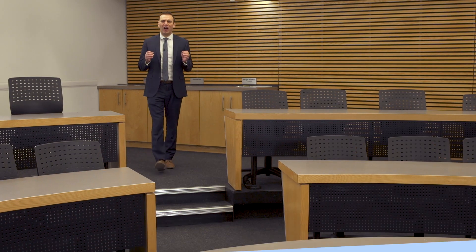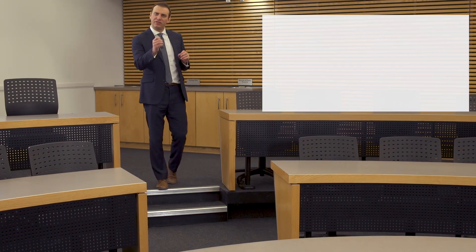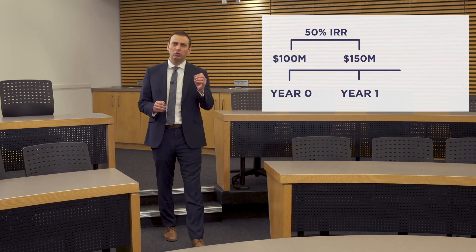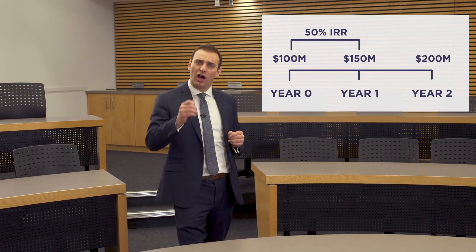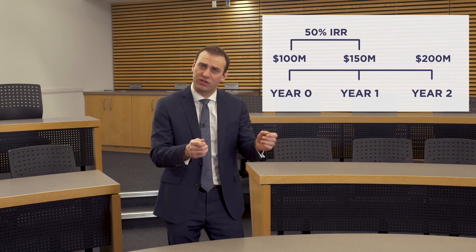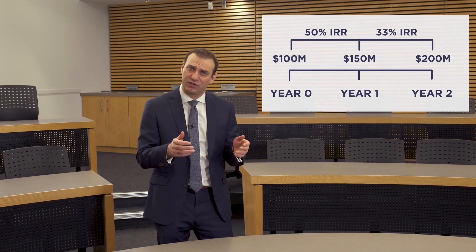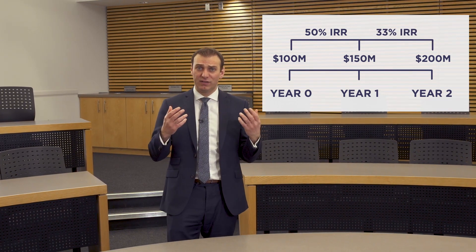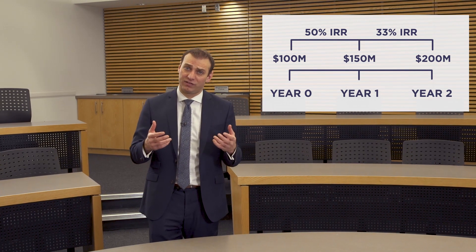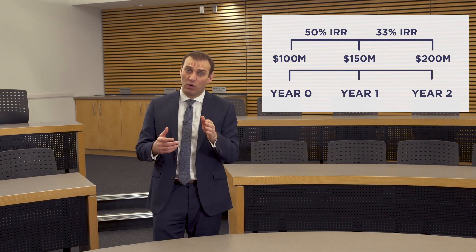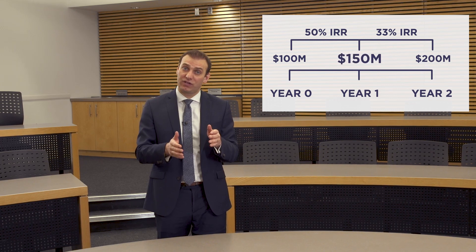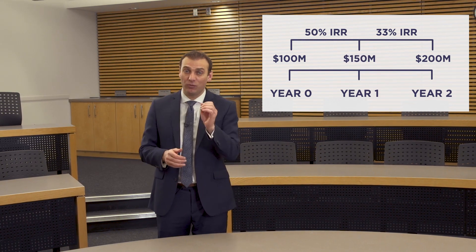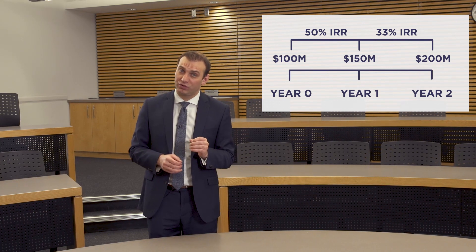Now let's look at it from the LP's perspective. If I'm an investor and I have the option of receiving $150 million at time one or $200 million at time two, what would I prefer? $150 million from time one to $200 million in time two would produce a 33% return, and as an investor in this environment, good luck getting 33% somewhere else. So even though the GP would prefer to sell at year one and get $150 million because that maximizes IRR, the LP, the investor, would probably prefer to hold it to time two.